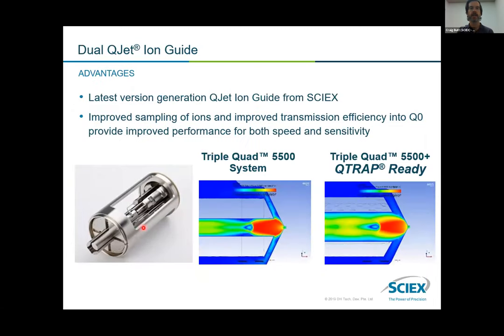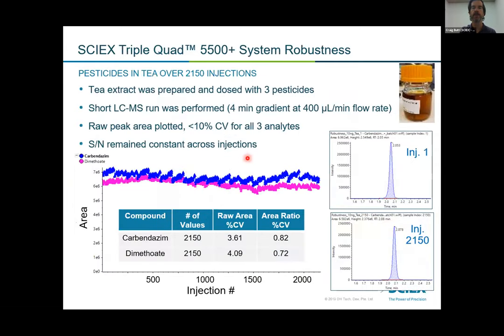The newer Q-Jet has improved ion transmission, which ultimately helps with sensitivity. For robustness, system tests done with a tea extract and various pesticides — over 2,000 injections — show very good robustness and reproducibility, which is important when running dirty matrix samples. That's all I had in terms of an introduction to PFAS, some applications, and the technology.